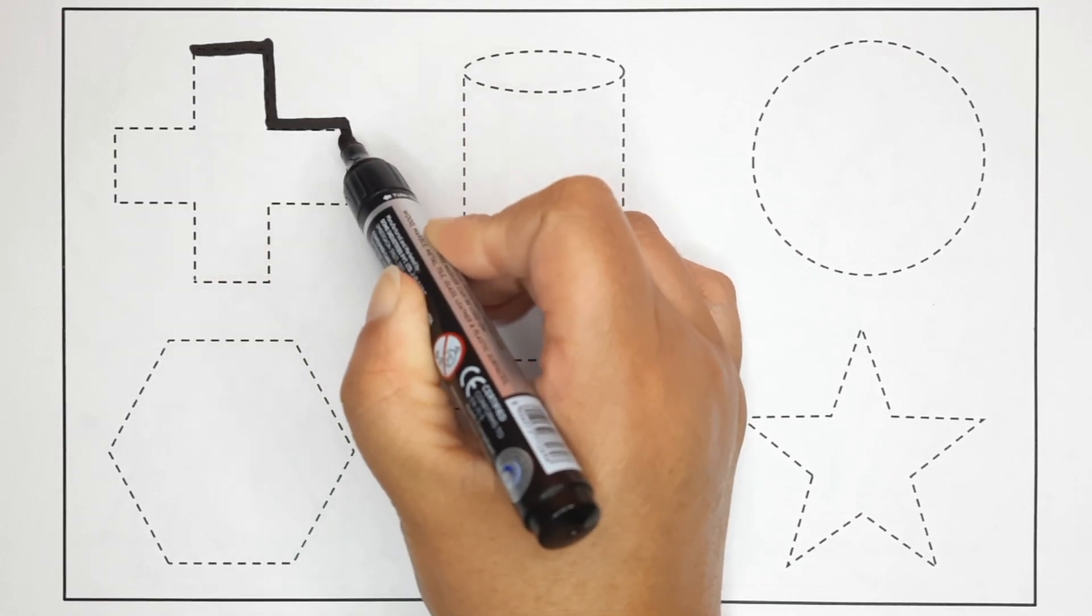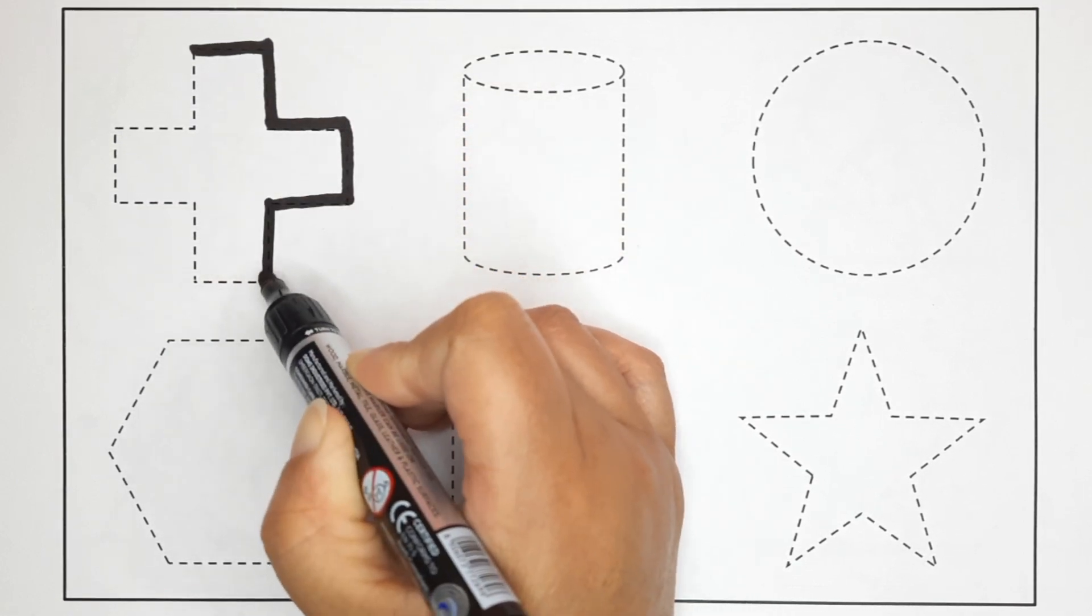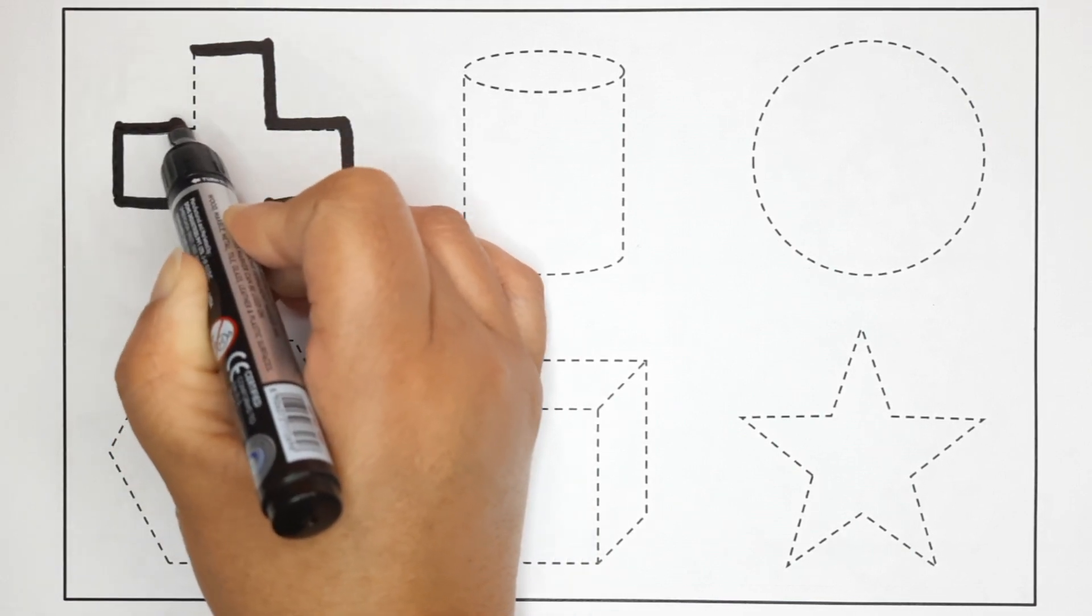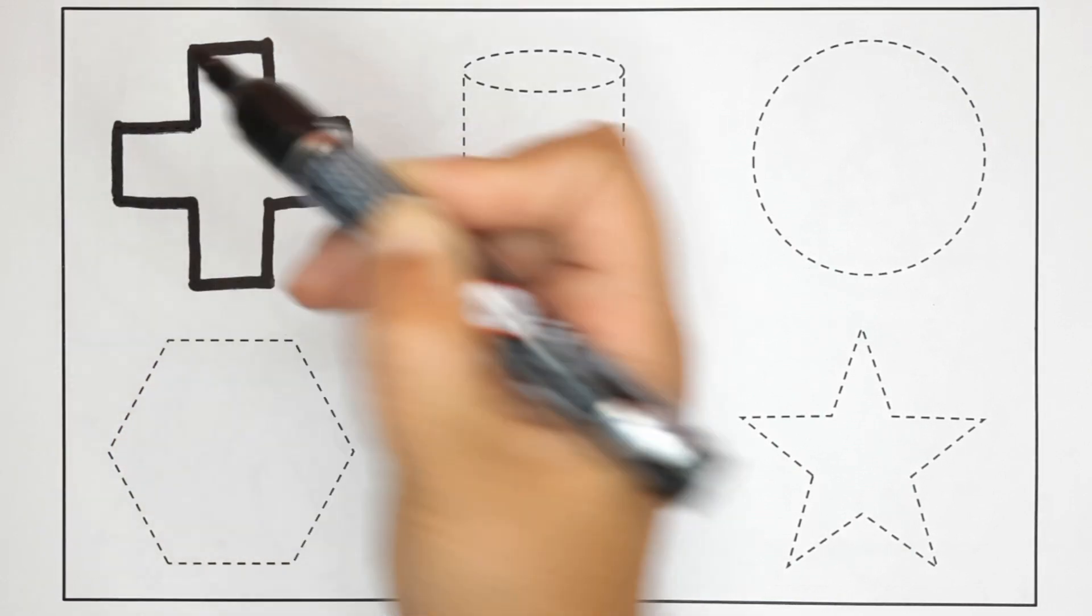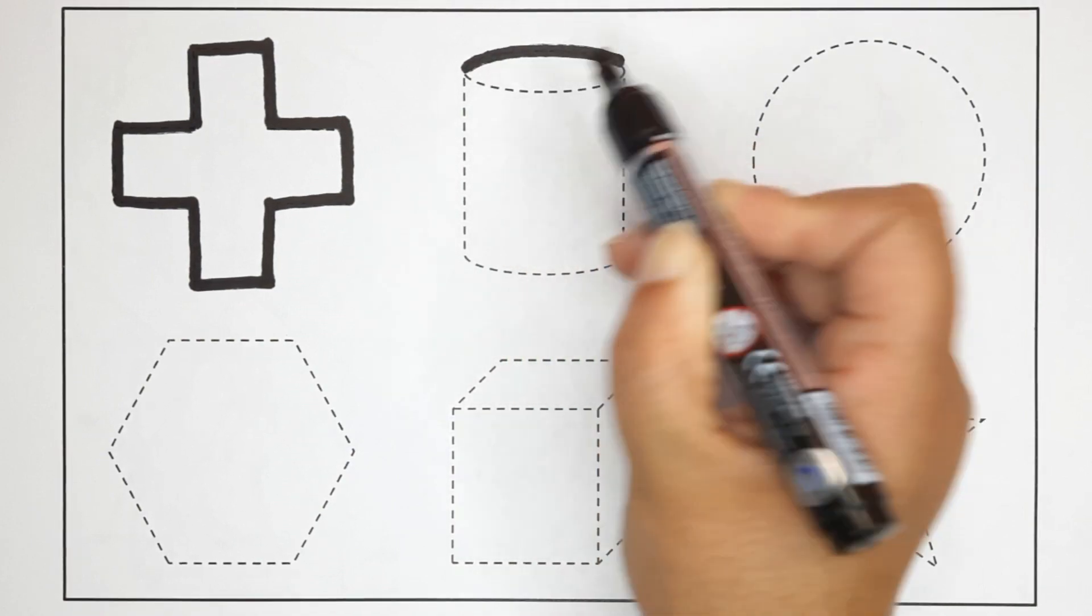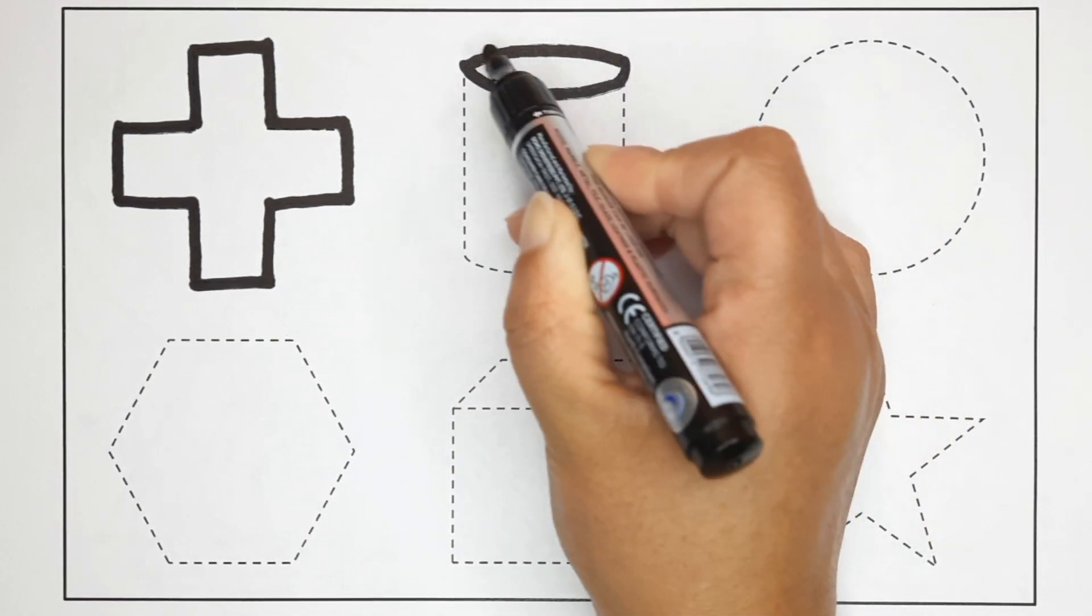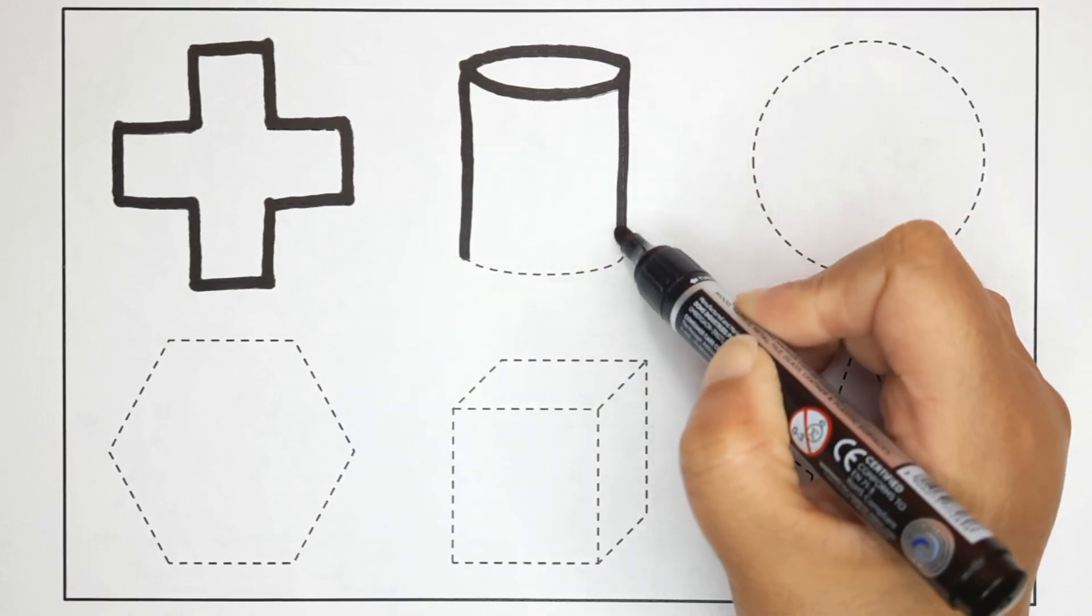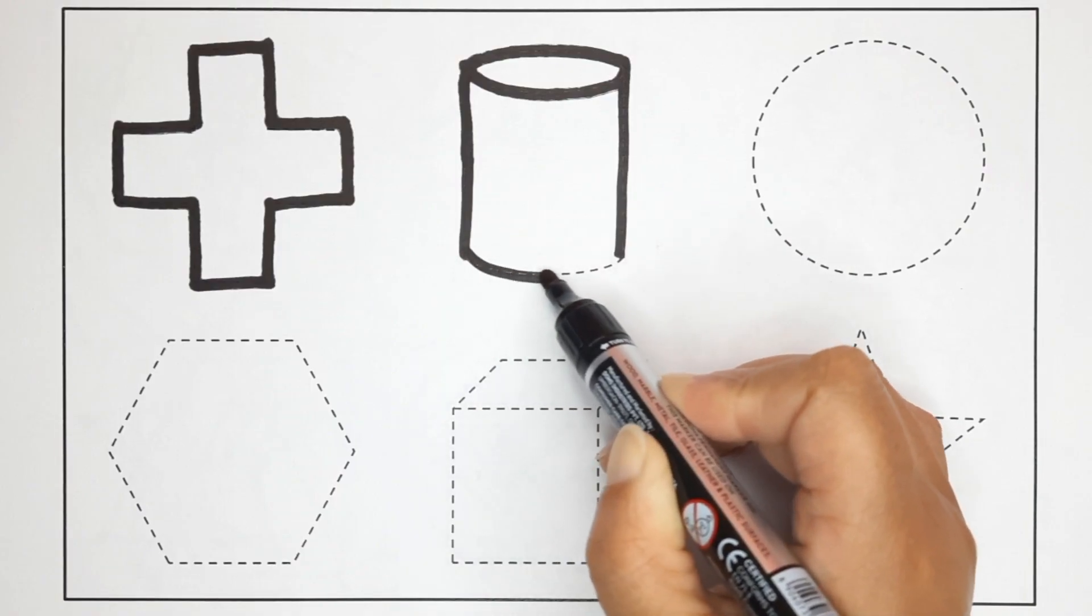Cross. This is a cross. Cylinder. This is a cylinder.